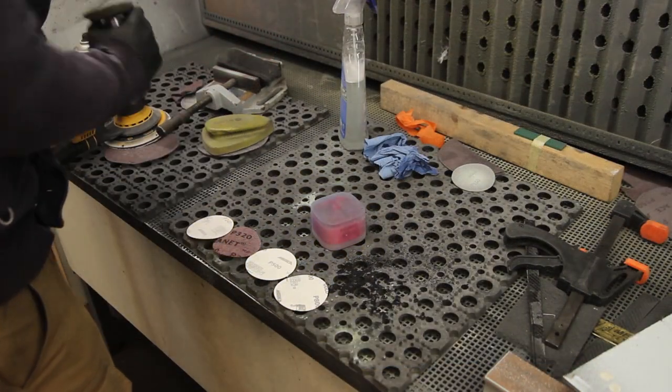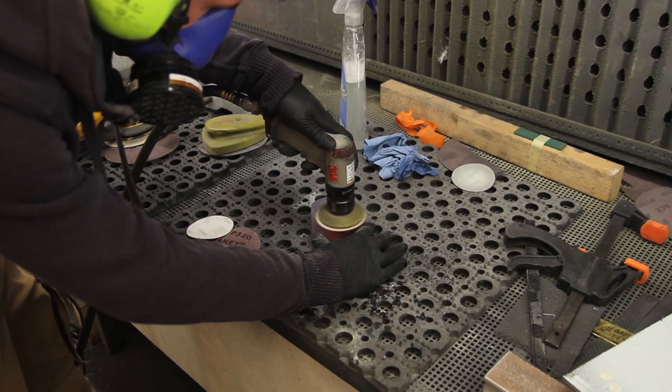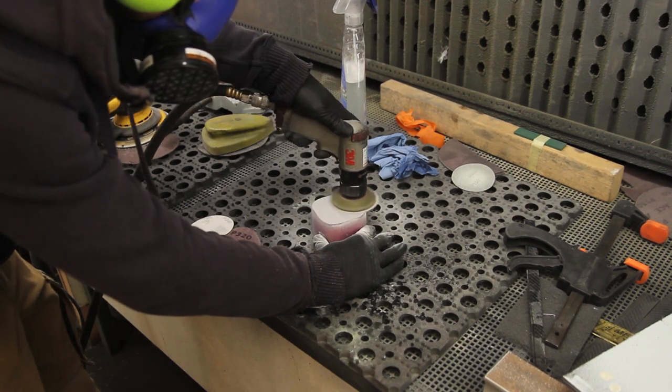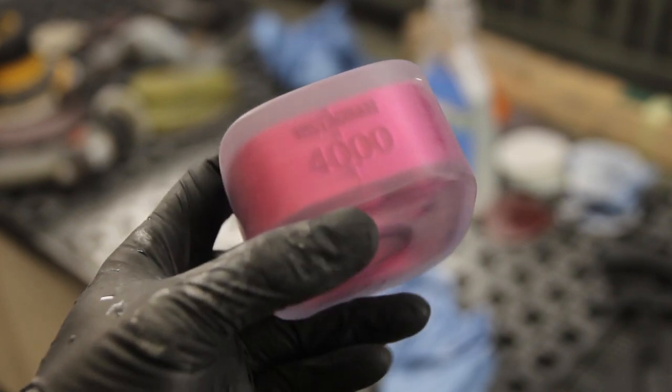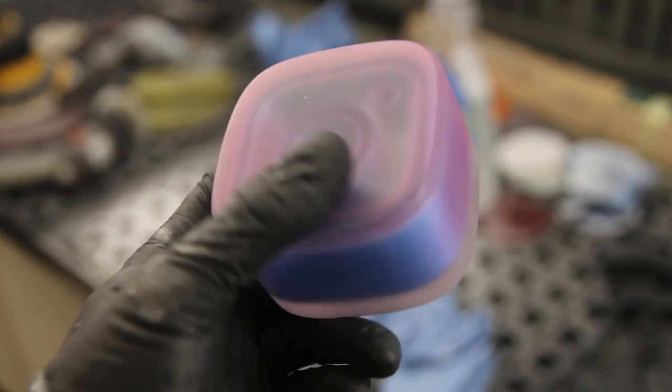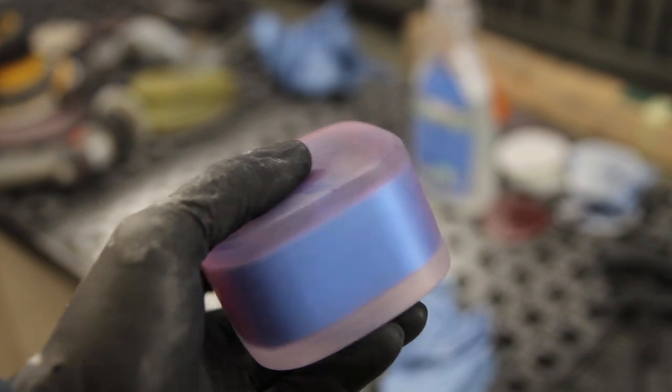Now that we have everything square and all the marks of the 3D prints are removed, you can proceed with the finer detail. I start with 150 again, then 220, 300, 500, and then 800.